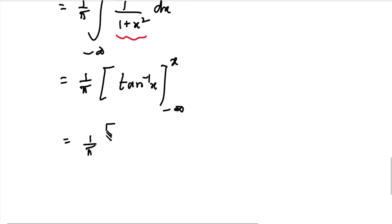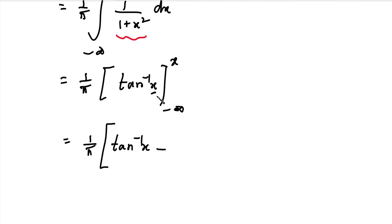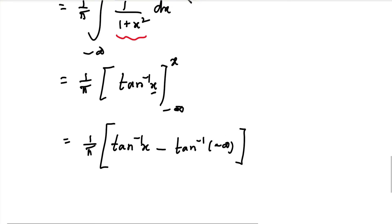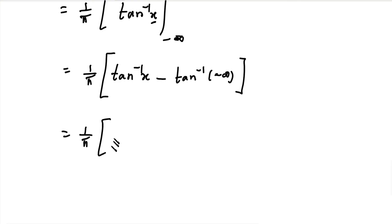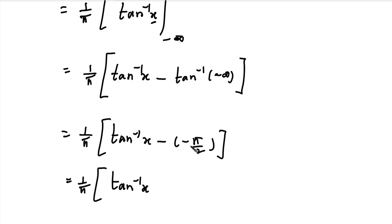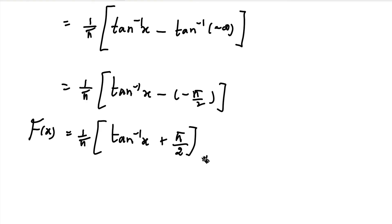Applying the limits: first substitute the upper limit x into tan inverse x, giving tan inverse x, then minus the lower limit, which gives tan inverse of minus infinity, equal to minus pi/2. So this equals 1/pi times [tan inverse x minus (minus pi/2)], which simplifies to 1/pi times [tan inverse x plus pi/2]. This is the cumulative distribution function, capital F of x, where x varies from minus infinity to plus infinity.